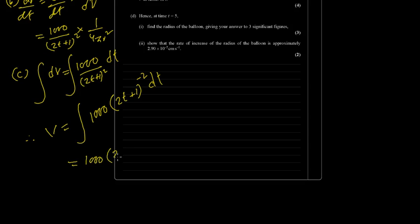This would be 2t plus 1 to the power minus 1 plus 1 is minus 1 divided by minus 1. Into, there is a chain rule, reciprocal. 1 by d by dt of the expression is 2 plus c, the constant.